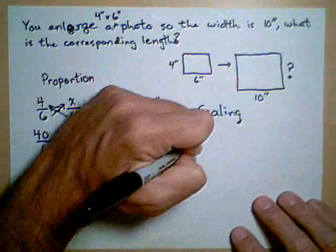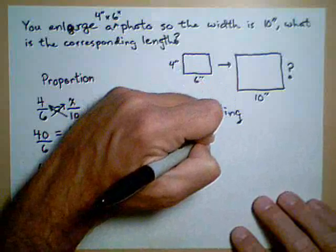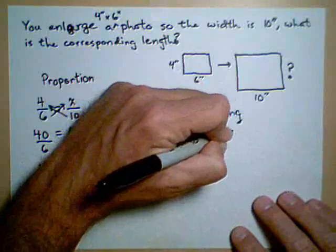We're going to take 6, and it's getting multiplied by some scaling factor. Let's call it R, since we've already used x, to get 10.